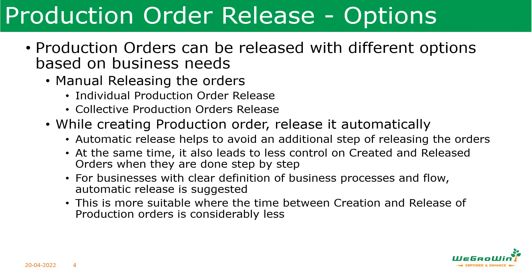Please pay attention here. While automatic releasing of production orders helps to avoid additional steps, controlling some of the parameters will be missing. In some organizations, the time between creation of the orders and releasing the orders may be huge — maybe a few days. During that time, they need to check whether the materials are available, resources are available. Only when these things are confirmed can they release the order. If we ask the system to release orders without checking these, then control may be missing. So automatic releasing can be used when we have a very clear business process with a mature understanding of the business.